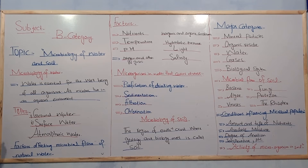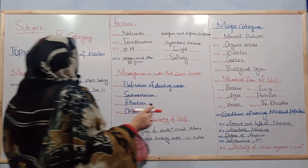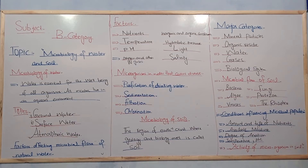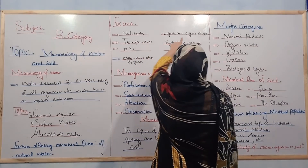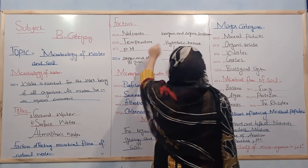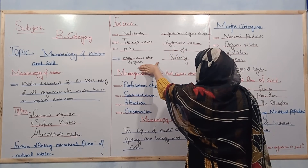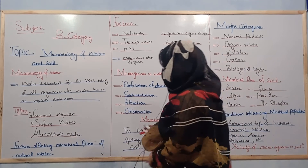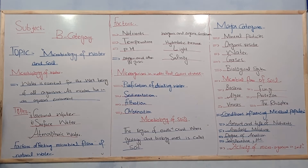Now we talk about the microbial flora of natural water. The major factors affecting microbial flora of natural water include nutrients, temperature, organic and inorganic constituents, pH, hydrostatic pressure, light, oxygen and other gases, and salinity.